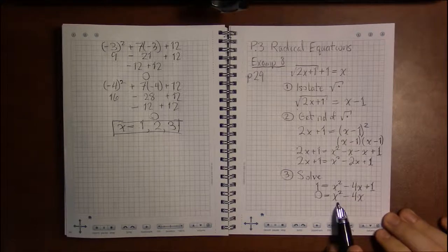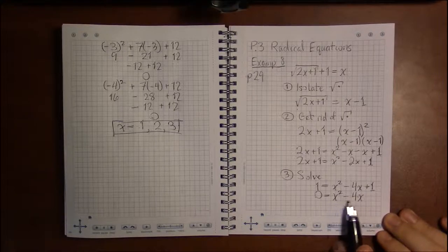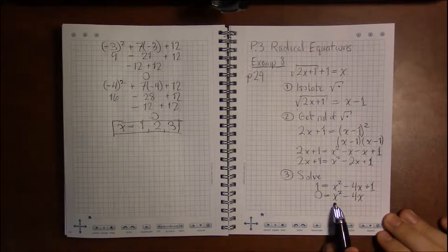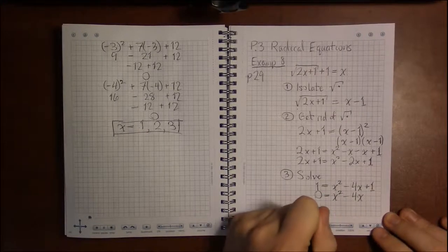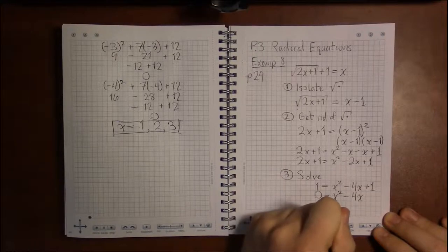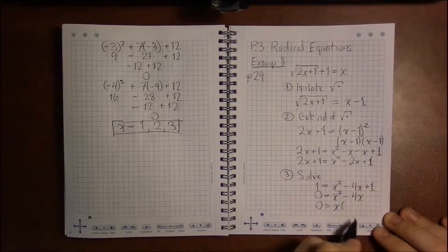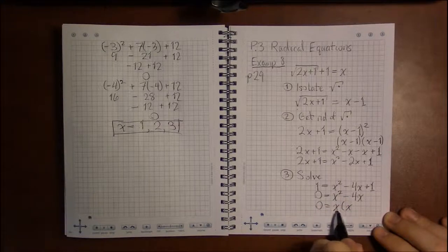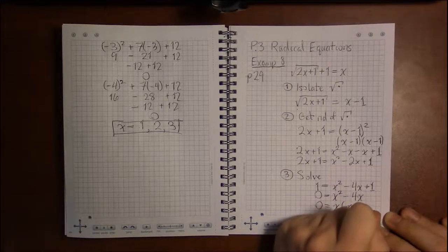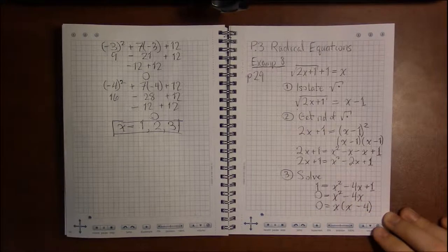Now, this is quadratic, but there's only two things, so this should be fairly easy to factor. We just ask ourselves, what's in common with both terms? And in this case, we have an x in common. And pulling x out of x squared, we're left with x. And x out of minus 4x leaves us with just minus 4.